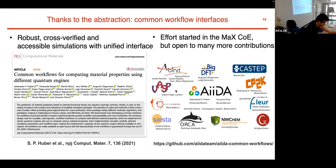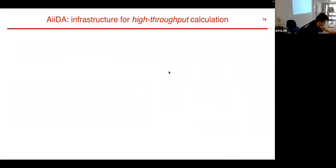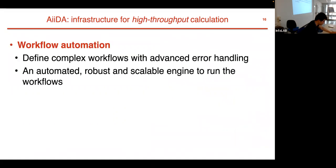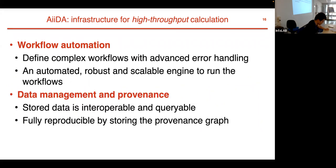In short, AiiDA is an infrastructure for high throughput calculation. It has this main feature of workflow automation. The user can define complex workflows with advanced error handling. AiiDA provides an automated, robust, and scalable engine to run the workflows. Also, AiiDA helps us to manage our data and automatically generate the provenance. The stored data are interoperable and curable, and it ensures full reproducibility by storing the provenance graph.